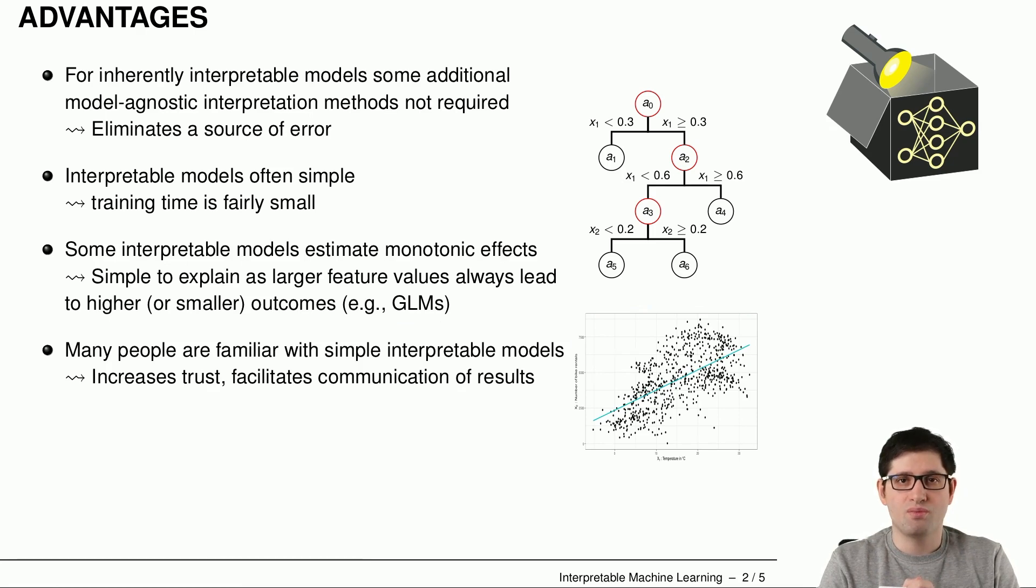And this is a nice property because we can summarize this marginal effect into one number, the slope of this line, that will tell us how the relationship between the temperature from the x-axis affects our target on the y-axis. Another advantage of interpretable models is that many people from different areas already are somehow familiar with these models. And being already familiar with a certain class of models, of course, increases trust because you understand what's going on. It simplifies the communication of the results. You can much easier tell to a layperson what the model did. And it's rather intuitive, like this decision tree or this linear line. This is something that you can directly communicate to laypersons and they usually get some idea of what's going on.